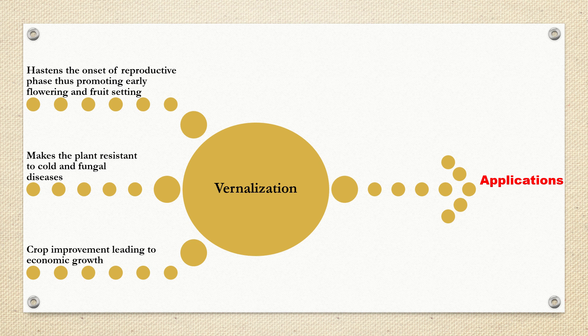When fruiting and flowering occurs earlier, it leads to agricultural growth, which paves the way for economic growth. These are the few applications of vernalization.